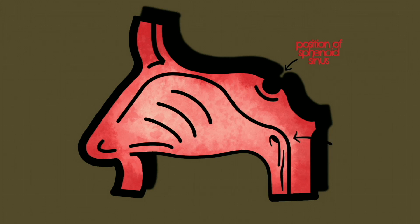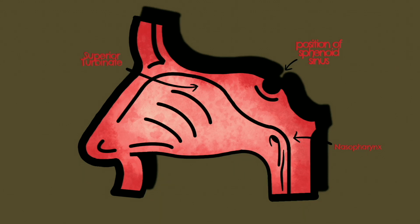Just beneath this is the area named the nasopharynx. This is the upper portion of the pharynx and is located directly posterior to the nasal cavity. Beneath the nasopharynx is the oropharynx, and beneath the oropharynx is the laryngeal or hypopharynx. Within the nasal cavity itself there are three nasal turbinates — long, narrow passageways that warm and humidify the air. These nasal turbinates are also known as nasal concha.